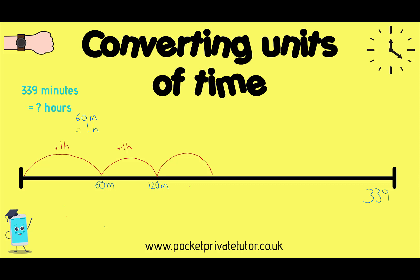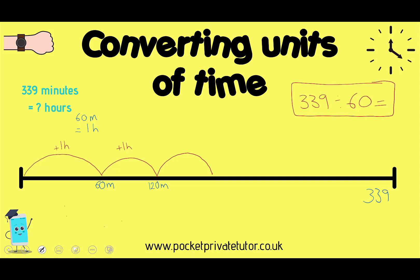You could do that by doing 339 divided by 60. But it's what you do with the remainder that's important. I'm going to carry on showing you how to do this calculation using a number line, writing down how many minutes each time.